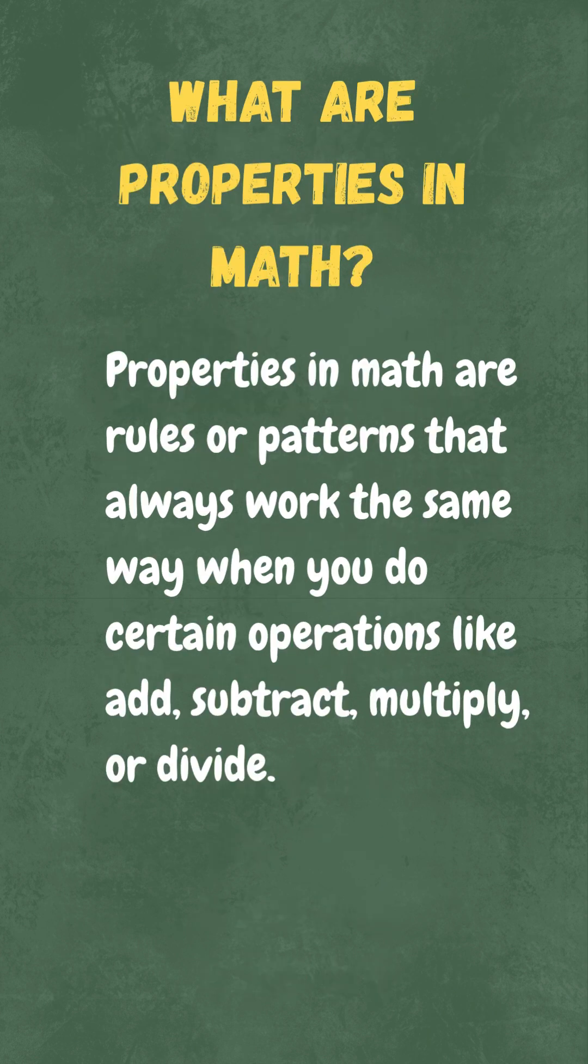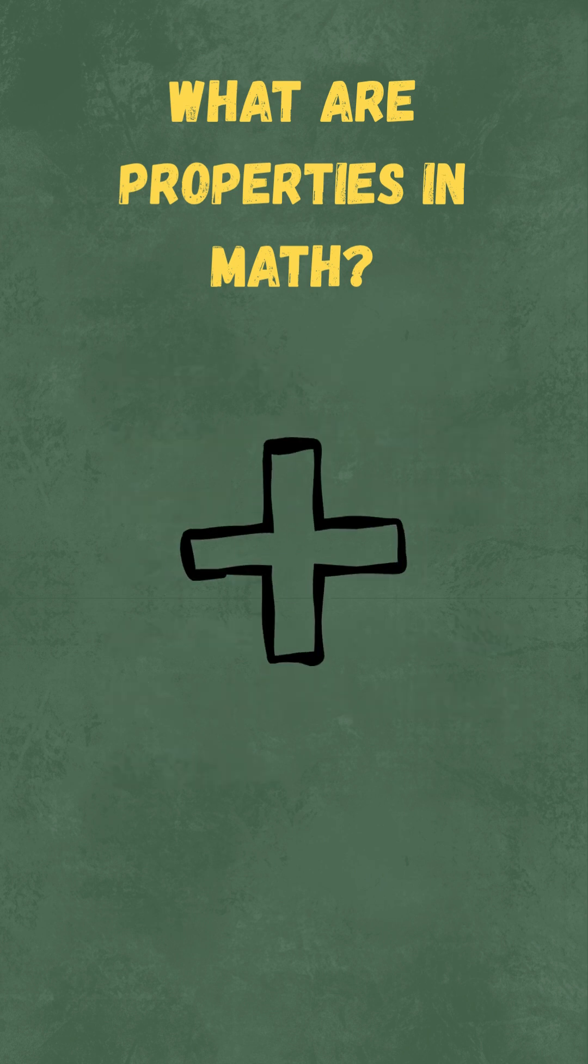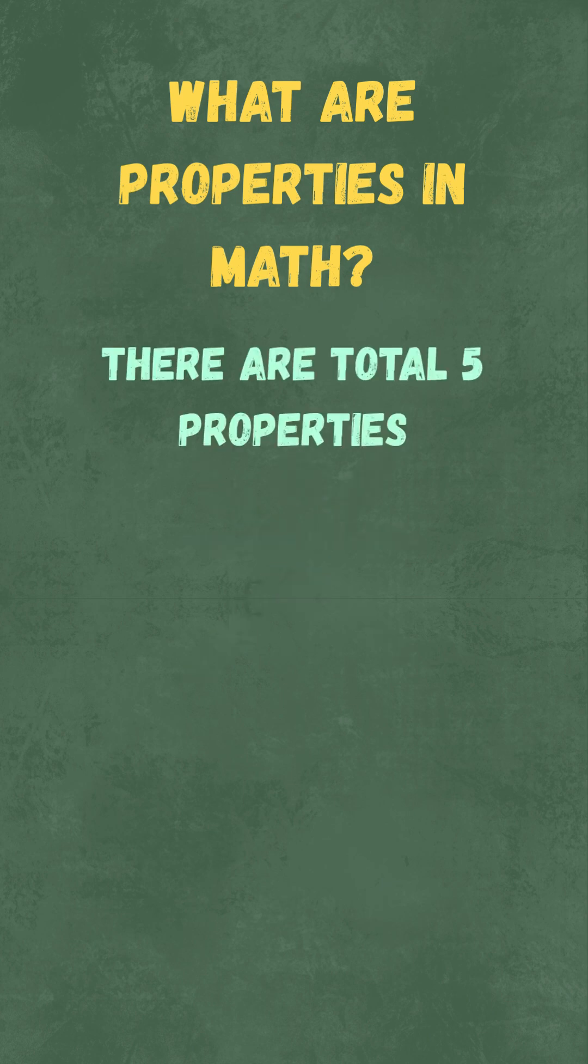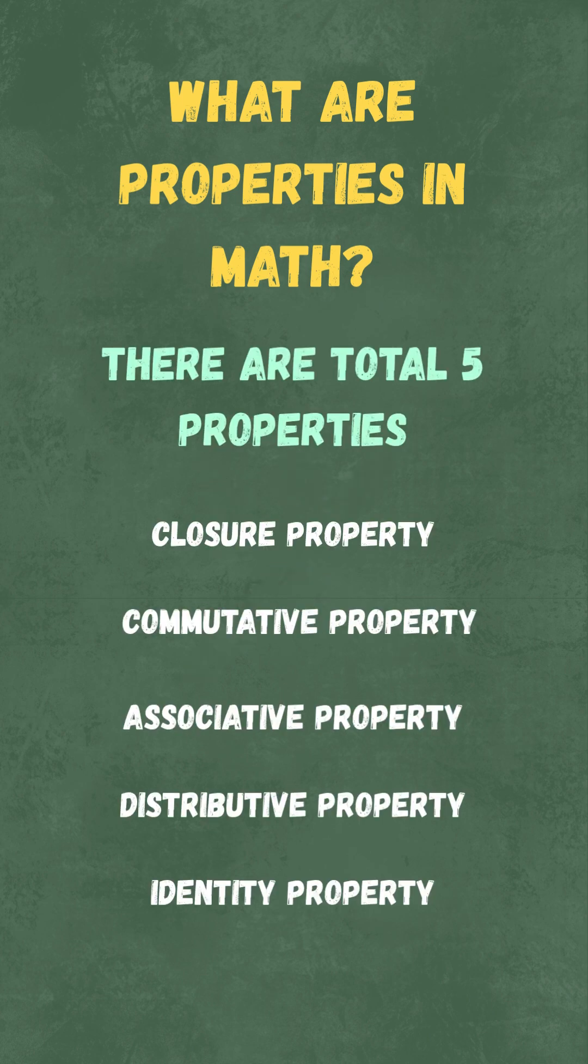What are properties in math? Properties are just rules or patterns in math that always work the same way when you add, subtract, multiply, or divide numbers. There are five important properties in total. Today, we'll talk about the first one, the closure property.